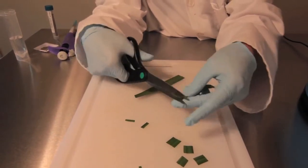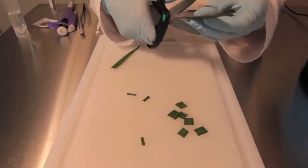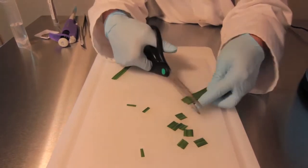If you are homogenizing leaf samples, cut them into pieces that are about half an inch by half an inch.